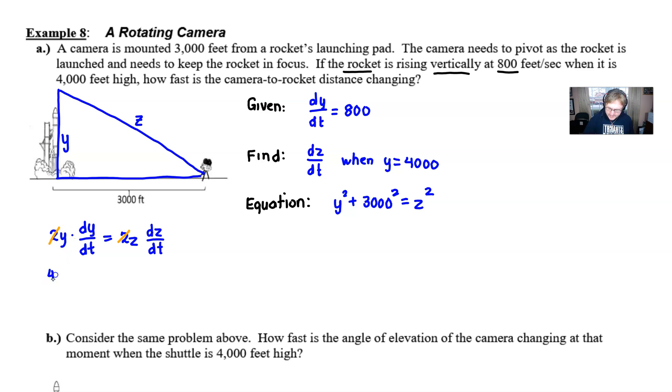And at this point, Y we know is 4,000. The dy/dt is 800. The Z, I don't think it was given in this problem. However, if you look over here to the right, we've got a situation where the bottom is 3,000, the vertical height of the rocket is 4,000. Therefore, that makes the hypotenuse 5,000. That's just an application of the most famous Pythagorean triple, 3, 4, 5, where it's all multiplied out by 1,000. Then you can find your dz/dt pretty easily at this point.